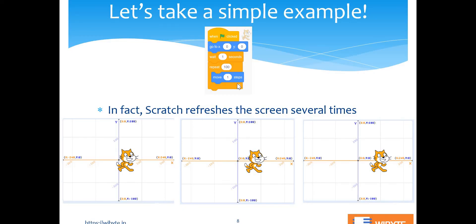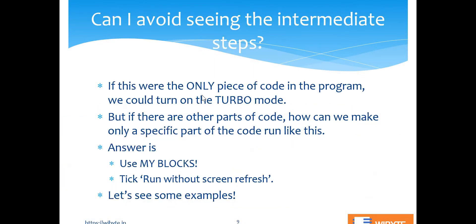In fact, Scratch is drawing the screen multiple times while the whole loop runs — for example, when the cat was here, then a moment later it was here, and so on. This is the process of screen refreshing: every iteration of the loop causes the screen to be redrawn, giving a nice sense of motion. But a question comes up: can I somehow skip these intermediate steps and only refresh the screen once at the end?